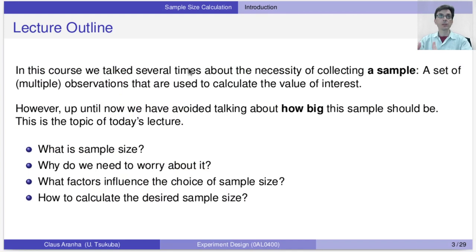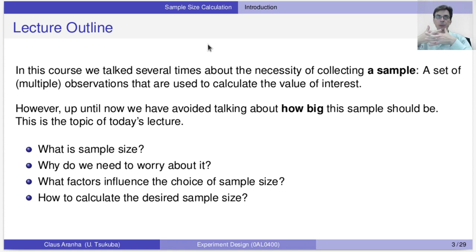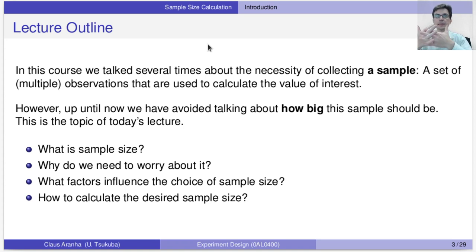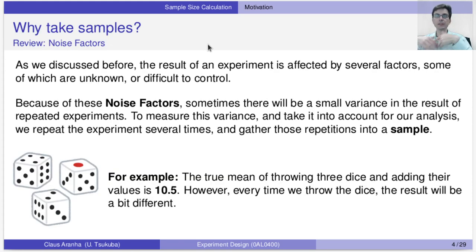In this course, we talked many times about the necessity of collecting a sample, which is a set of multiple observations used to calculate the value of interest. A few people have asked how we calculate the sample size, and until now we have avoided talking about how big the sample should be. Today I'm going to talk about how we calculate the sample size and how it affects our experiments. The topics are: what is the sample size, why we need to worry about it, what factors influence the choice, and how we calculate the desired sample size. This will be a reminder of lectures 2 and 3.